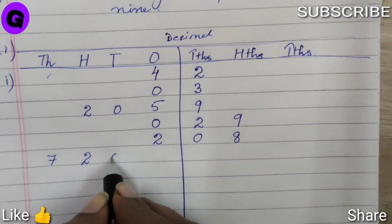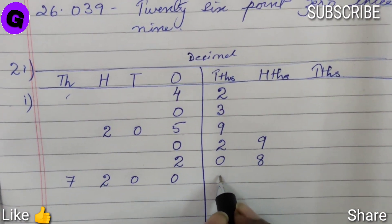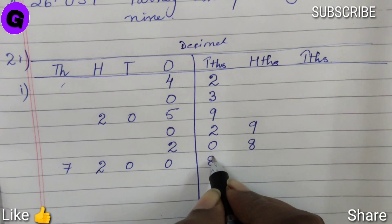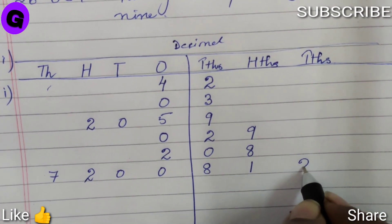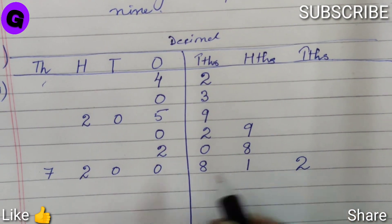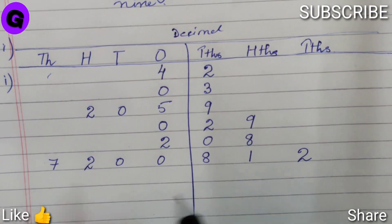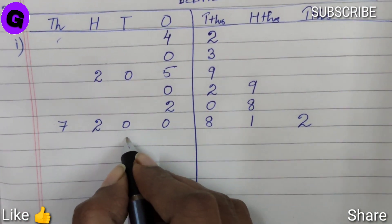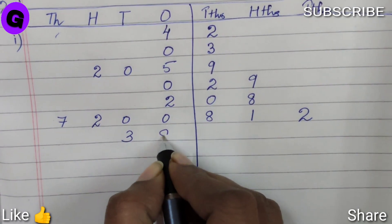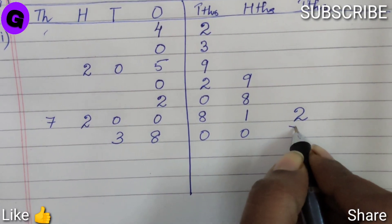Point 8 will be written on the tenths, 1 will be written on the hundredths, and 2 will be written on the thousandths column, so 7200.812. Next is 38.007, so 3 will be on the tens and 8 in ones, 0.007.